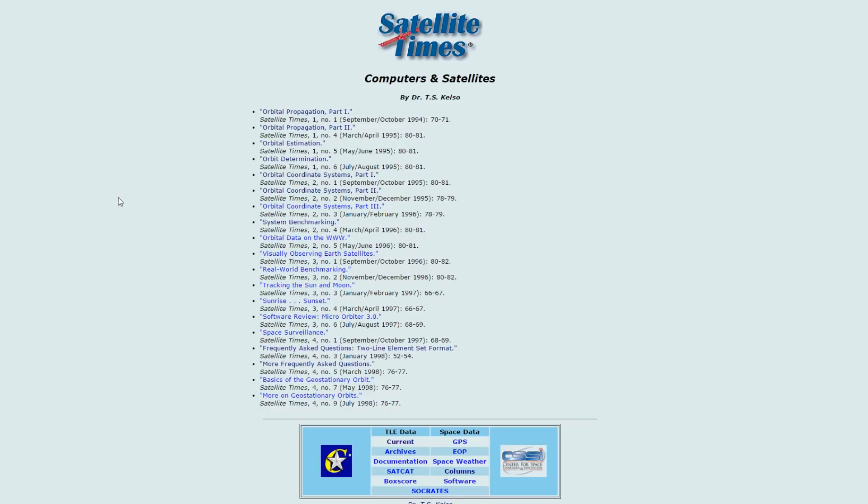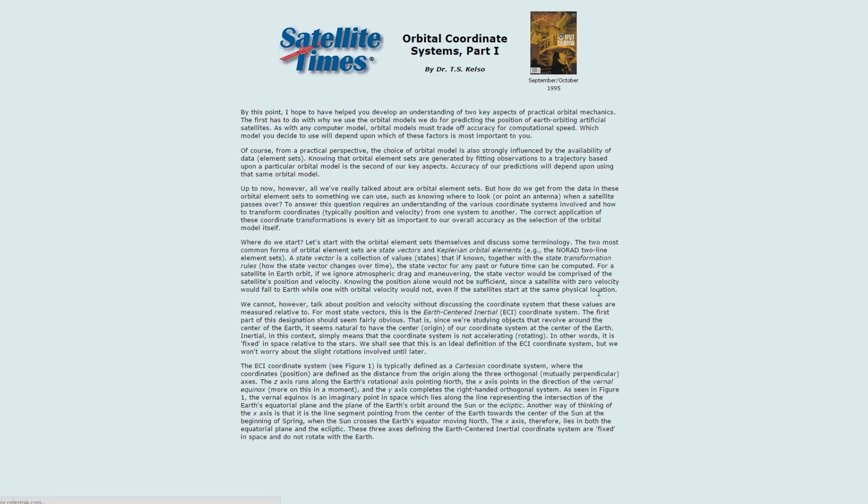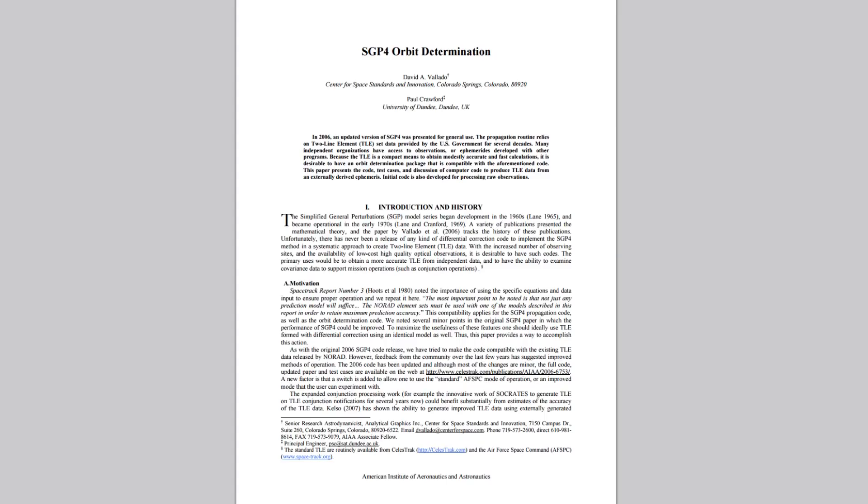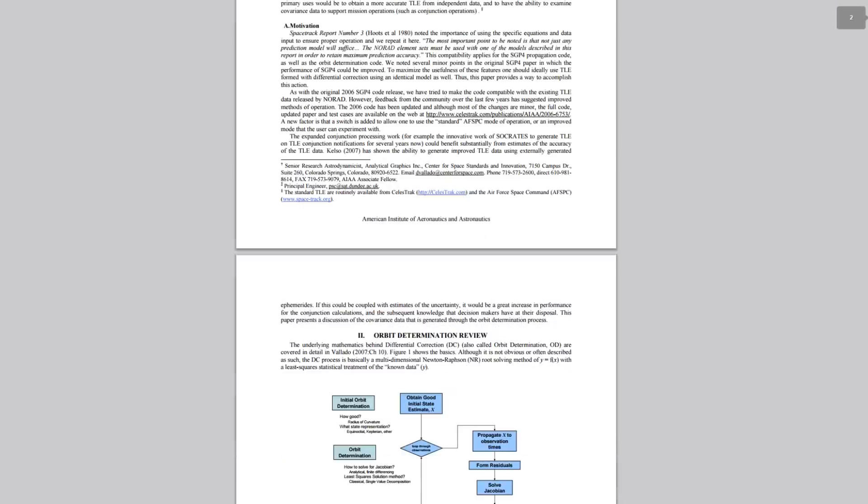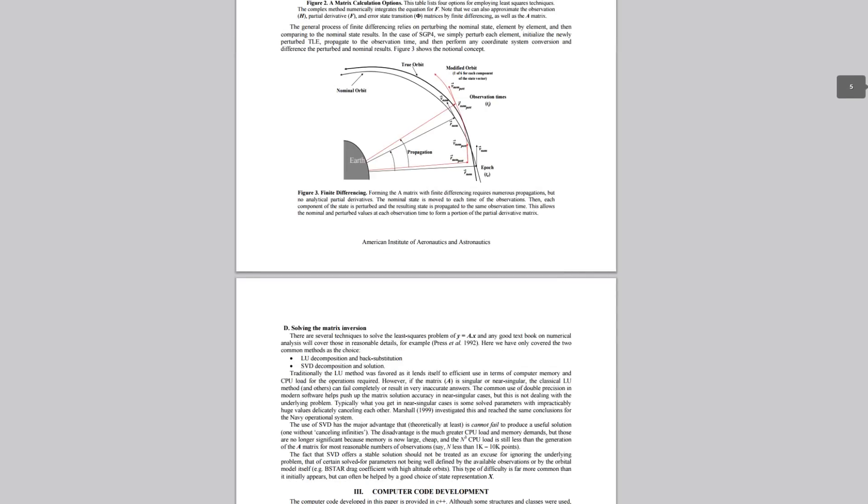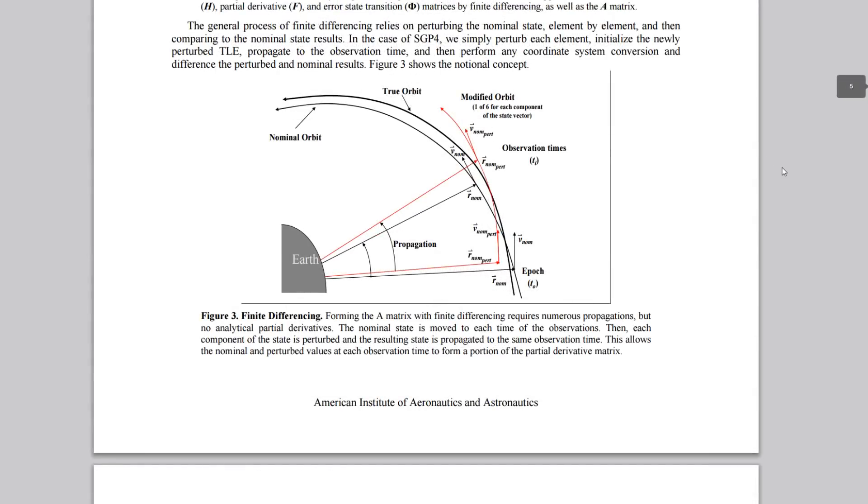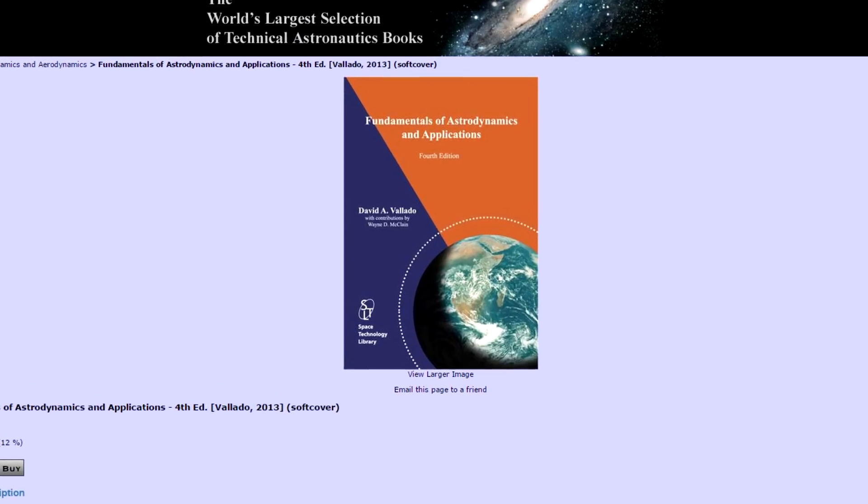Predicting the location of a satellite in the future is called orbital propagation, and the de facto standard model for doing this is called the simplified general perturbations model, or just SGP. An open-source version of this model was written in the C programming language by David Vallado as a companion to his textbook Fundamentals of Astrodynamics and Applications. I ported this code to run on the Nucleo board without too much trouble.